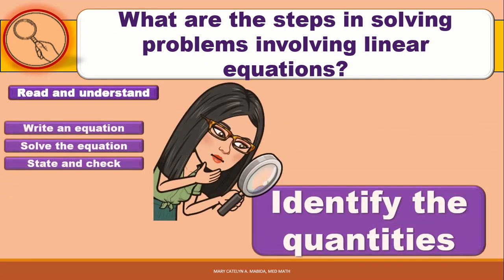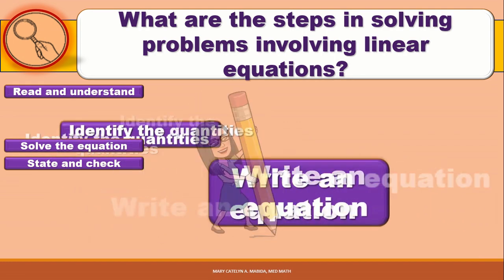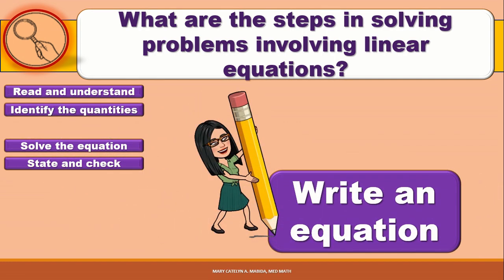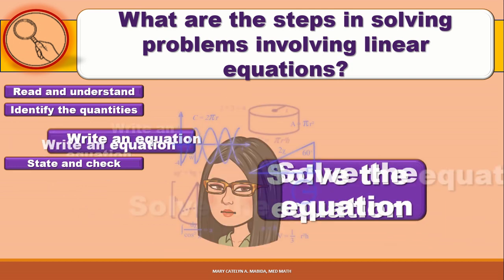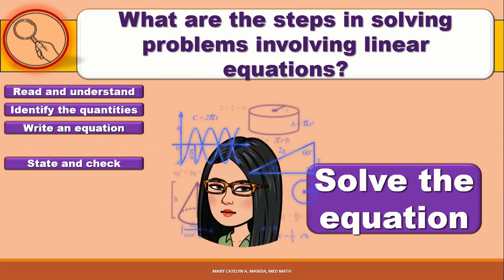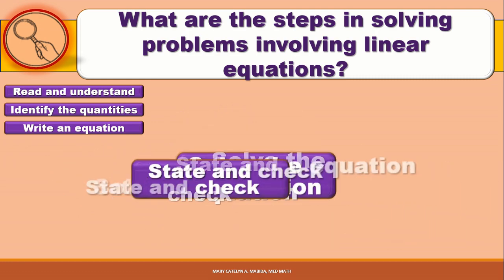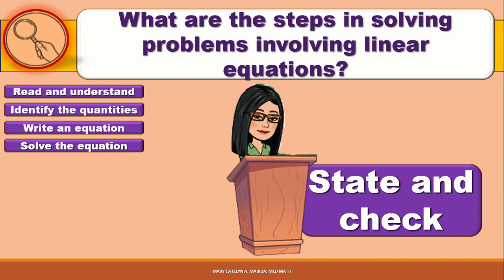Step 2: identify the quantities involved or the given, and assign a variable to represent the unknown. This answers the question: what are the given with representation? Step 3: write an equation. This answers the question: what is the equation? Step 4: solve the equation — show your solution. And lastly, state the answer in terms of the problem and check the result.